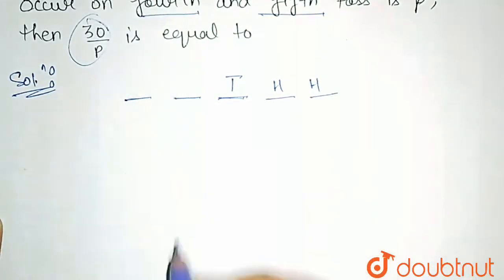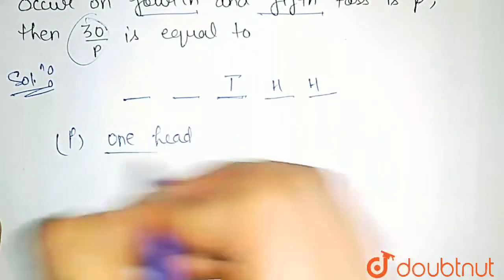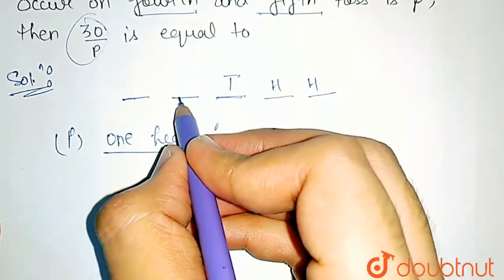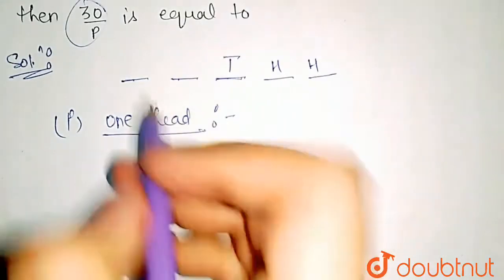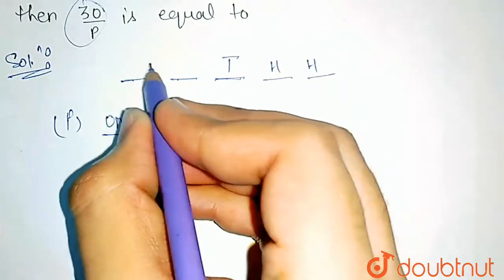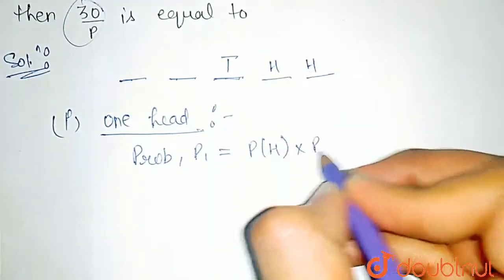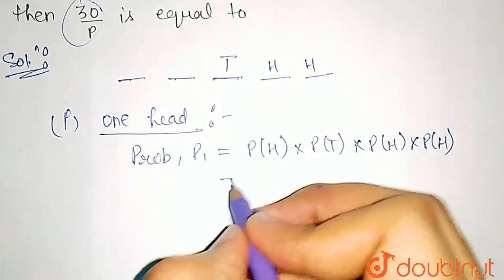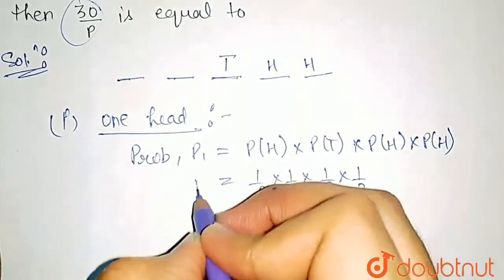Now we consider the first two positions. In the first case, there is exactly one head in these two positions. If there were two heads, then two consecutive heads would be obtained at the first and second position, which is not the case. So only one head is possible here. The probability P1 is equal to half raised to the power 4, that is (1/2)^4.